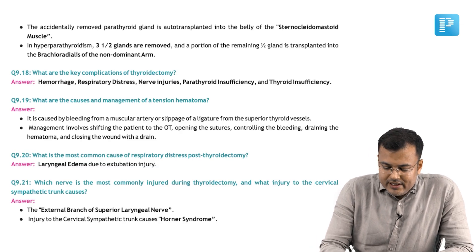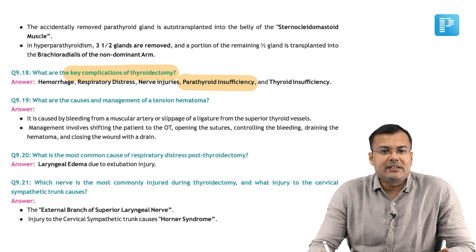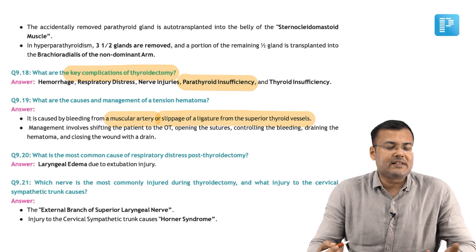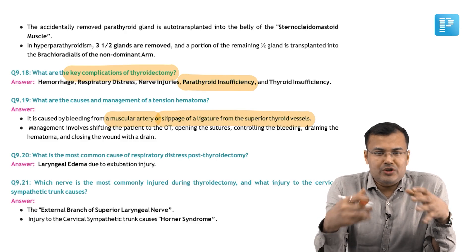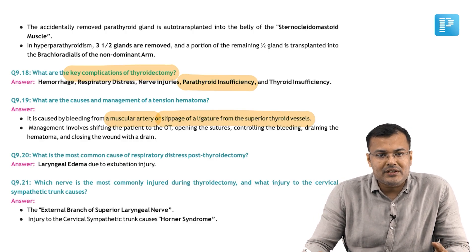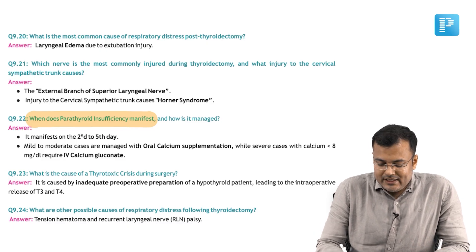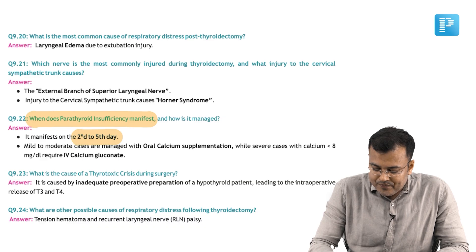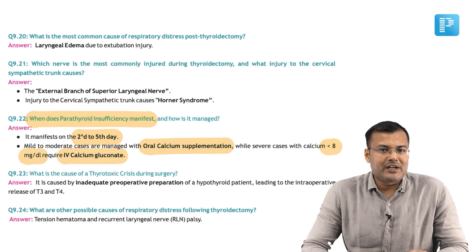Now see the notes. What are the key complications of thyroidectomy? There is hemorrhage, respiratory distress, nerve injuries, and parathyroid insufficiency. For tension hematoma — caused by bleeding from a muscular artery or slippage of ligature from superior thyroid vessels — management involves shifting the patient to OT, opening the sutures, controlling the bleeding, putting in a drain, and suturing the wound. Parathyroid insufficiency manifests on the second to fifth day. Management: oral calcium supplementation; if symptoms are severe or calcium is less than 8, give IV calcium gluconate.